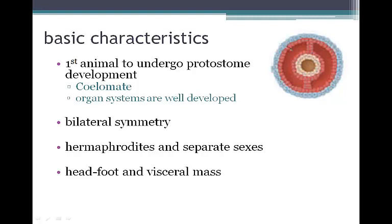Molluscs have bilateral symmetry, and some species are hermaphrodites while others have separate sexes. Molluscs also have a head, foot, and visceral mass. The visceral mass includes organs for digestion, circulation, reproduction, and respiration.